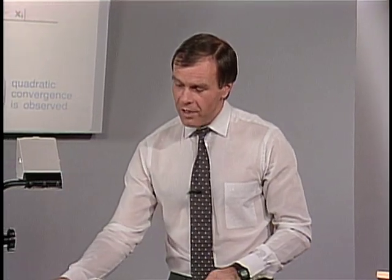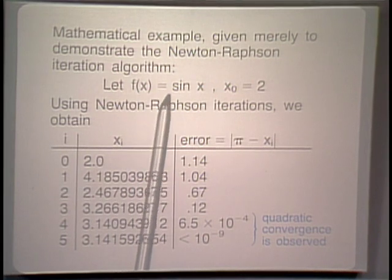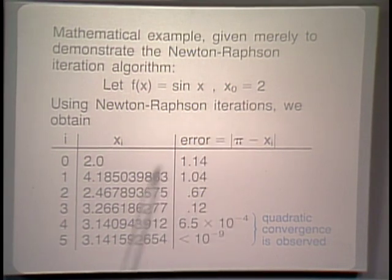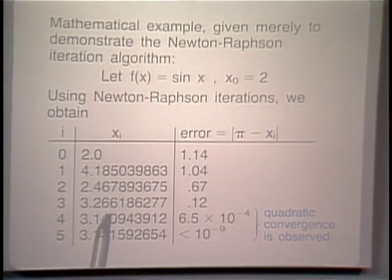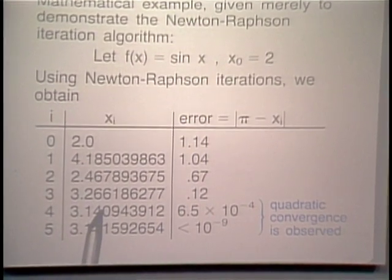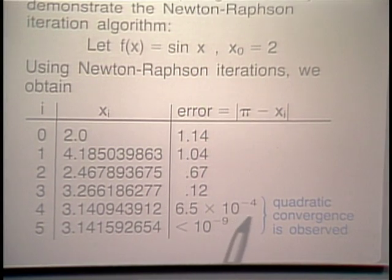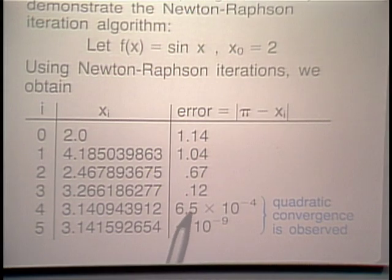Let us look at a mathematical example to get some insight into the technique. Let us say that f(x) equals sin(x), and that our starting value is equal to 2. In successive iterations, the values shown here are calculated. It is interesting to observe that when you are close to the root, you have quadratic convergence — meaning that the error epsilon becomes epsilon squared in the next iteration.